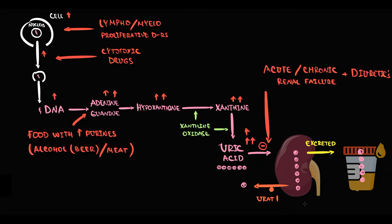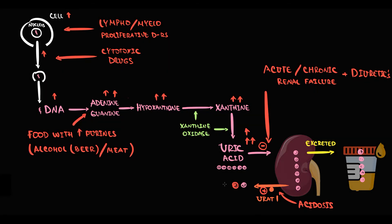An additional factor is acidosis. Both lactic acidosis and ketoacidosis stimulate uric acid transporter 1 (URAT1), and by doing so they increase the reabsorption of uric acid into the blood — the greater the reabsorption, the greater the concentration of uric acid in the blood.